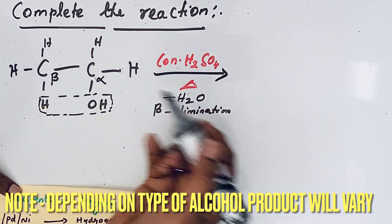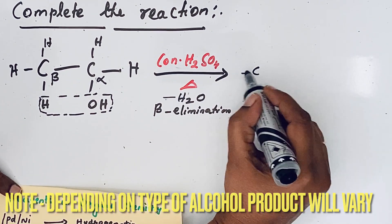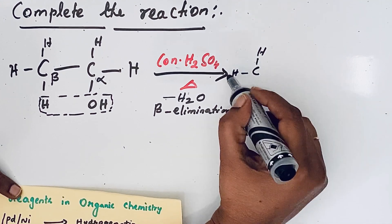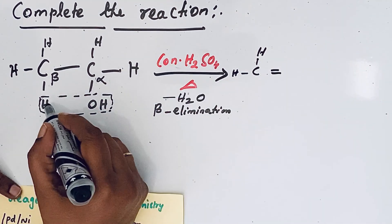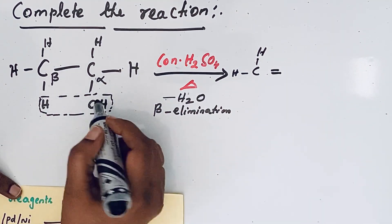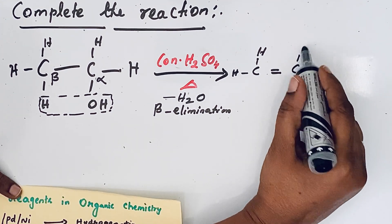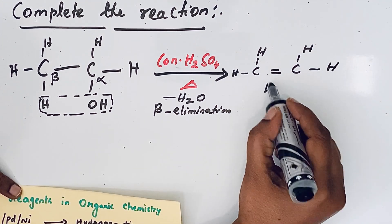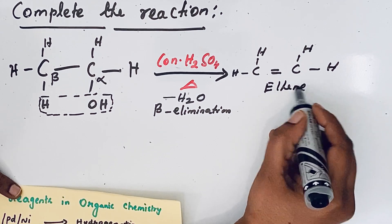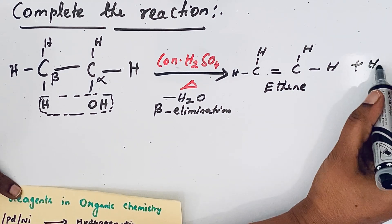So now we can write the product CH equals CH. It becomes a double bond because of the removal of hydrogen and OH group from here. CH and H. So it is ethene plus H2O.